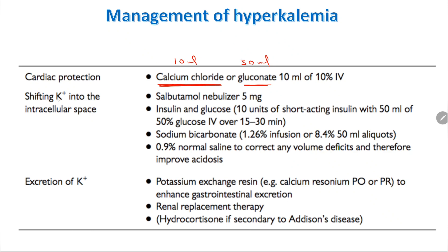For shifting potassium into the intracellular space, give salbutamol 5 milligrams for moderate or severe cases. Insulin and glucose are also used: insulin not only transfers glucose into cells but also transfers potassium into cells, thereby decreasing serum potassium levels.